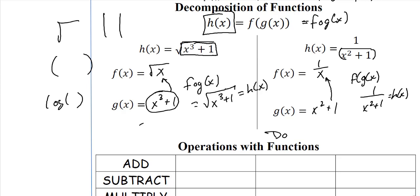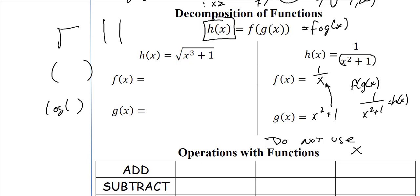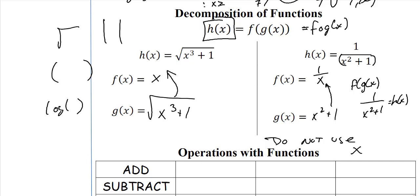One important note: do not use just f(x) = x for decomposition. I want different functions like 1/x, √x, or |x| — not just x itself. If you set g(x) = √(x³ + 1) and f(x) = x, that technically works but it's not what we want. We want meaningful, distinct functions for both f and g.